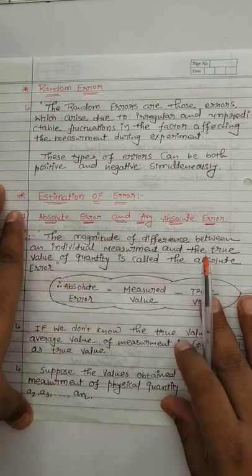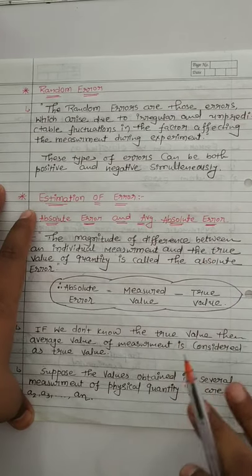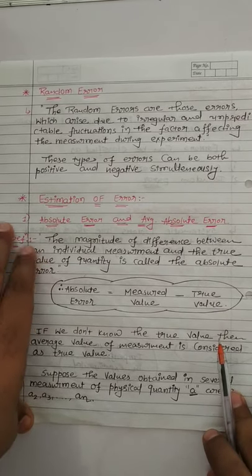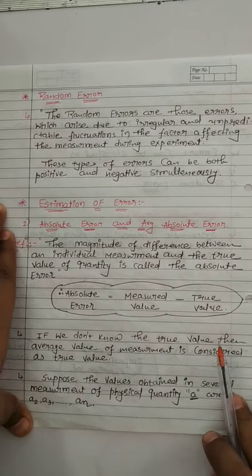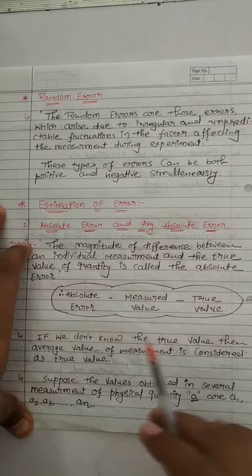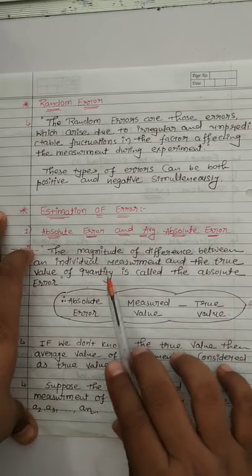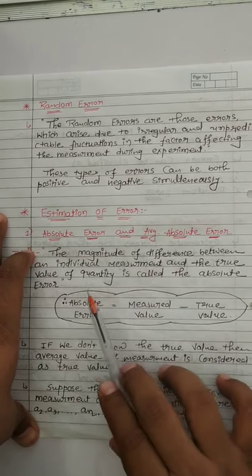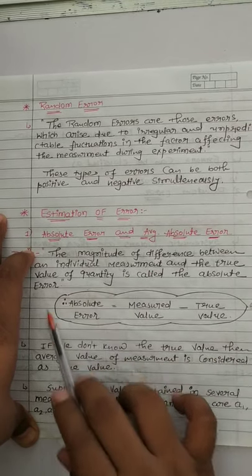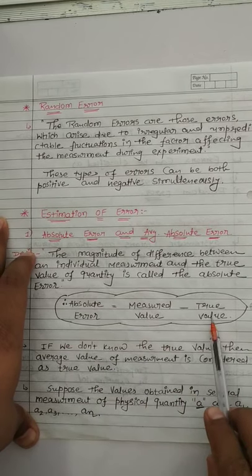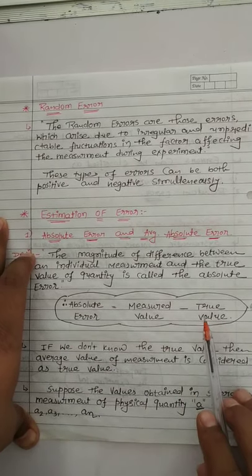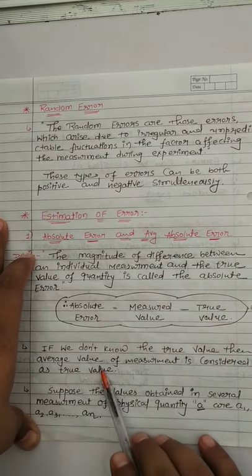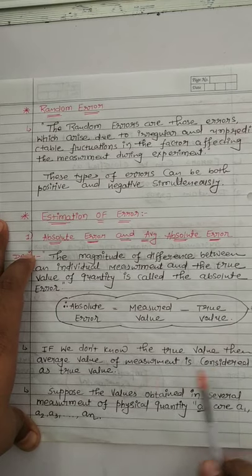Now let us discuss estimation of error. We divide it mainly into three parts: first is absolute error and average absolute error. The magnitude of the difference between an individual measurement and the true value of a quantity is called the absolute error. So, absolute error is equal to measured value minus true value. If we don't know the true value, then the average value of the measurements is considered as the true value.